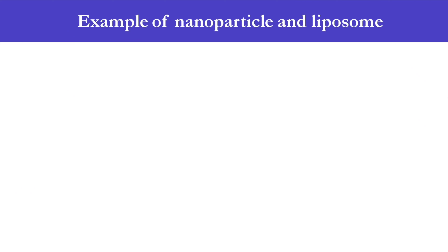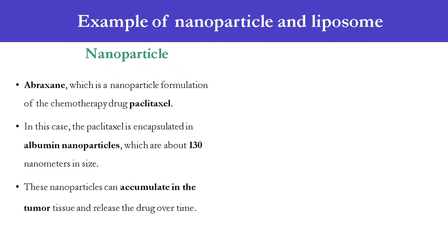Let us see the examples of nanoparticles and liposomes used in tumor targeting. Firstly, nanoparticle: Abraxane, which is a nanoparticle formulation of the chemotherapy drug paclitaxel. In this case, the paclitaxel is encapsulated in albumin nanoparticles which are about 130 nanometers in size. These nanoparticles can accumulate in the tumor tissue and release the drug over time.